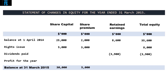Finally, in the previous video we computed Clarion's net profit for the year to be $8,280, and this figure is also taken to retained earnings, this time with a plus sign. When we now compute the balances at 31st March 2015, we arrive at $30,000 in respect of share capital, $5,000 for share premium, and $12,980 in respect of retained earnings, producing total equity of $47,980.